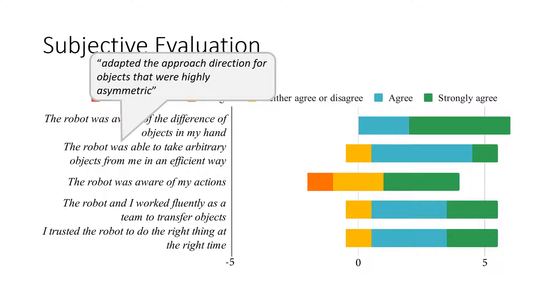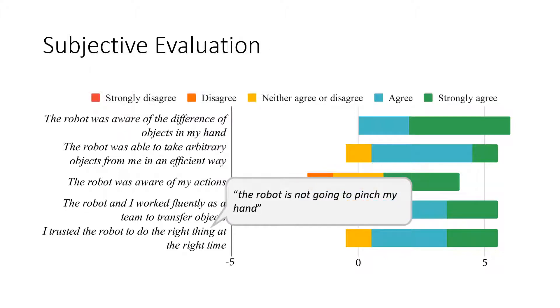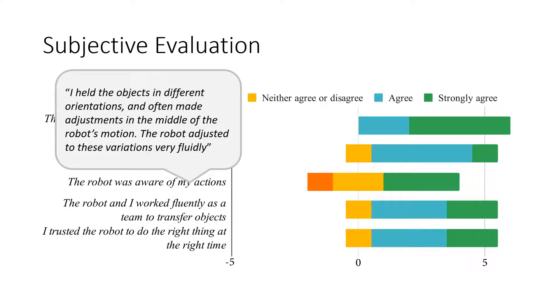Participants also noted that they felt safe during the experiment. One said, the robot is not going to pinch my hand. Lastly, participants noticed the reactivity of the handovers. One participant said, I held the objects in different orientations and often made adjustments in the middle of the robot's motion. The robot adjusted to these variations very fluidly.